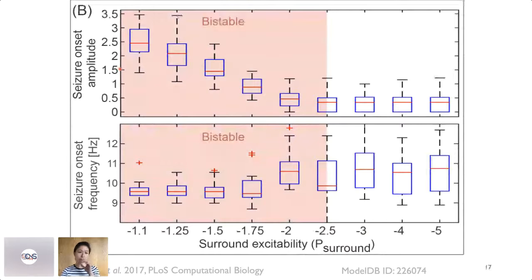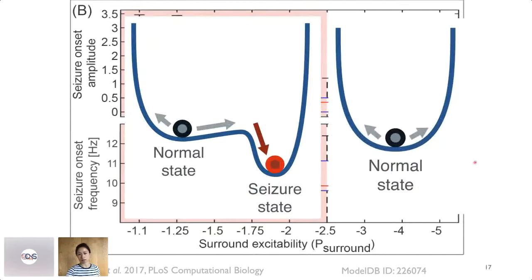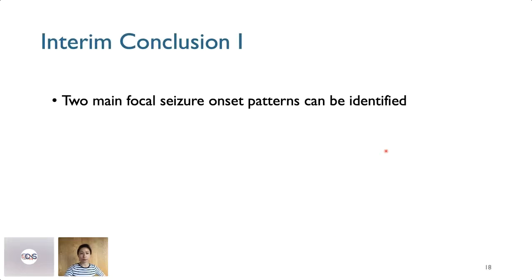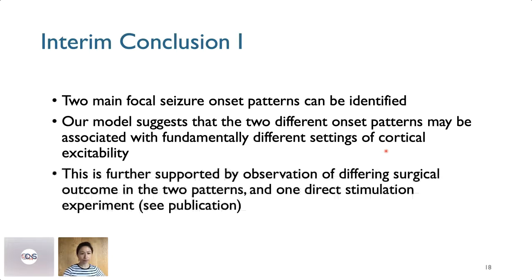Investigating further, we found that in the model there is actually a bi-stable region. In this region, the normal state co-exists with the seizure state, which is why recruitment can happen very fast and we see the immediate high amplitude onset. In the other part of the parameter space, there is only the normal state and the seizure state has to be created through local patches that gradually recruit the sheet. In summary, two main focal seizure onset patterns exist, and our model suggests they are associated with fundamentally different settings of cortical excitability.